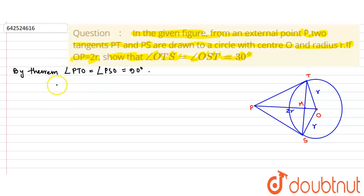So we can evaluate PT and PS by the Pythagoras theorem. PT is root over PO square minus TO square. That is PO square minus TO square, which equals 4r square minus r square, which is root 3r. So PT is root 3r.